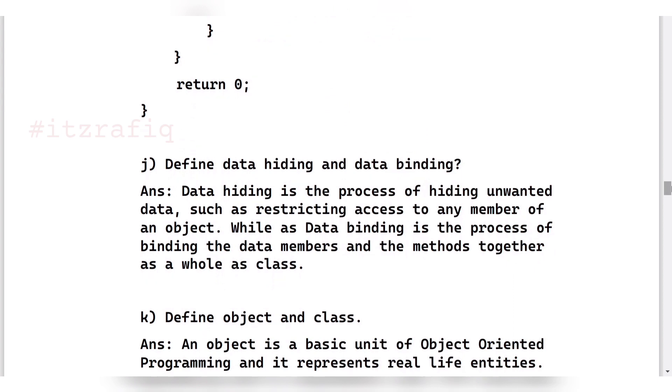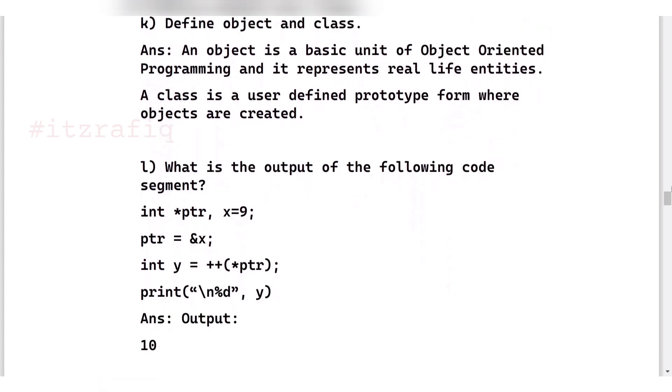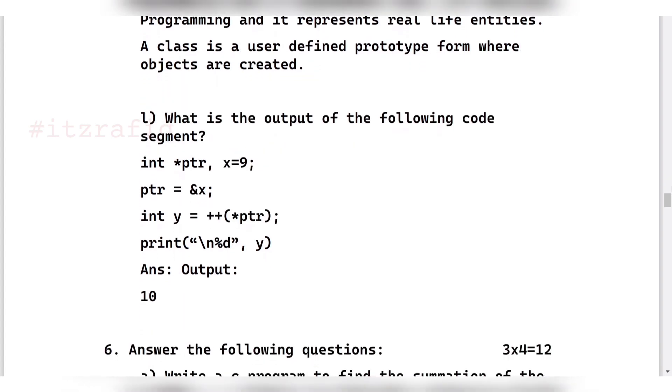Next, define data hiding and data binding. This is from chapter 10 from encapsulation. Data hiding is the process of hiding unwanted data such as restrictions, and data binding is used to bind the data members and methods together. Define object and class: object is the basic unit of an object-oriented programming, and class is the prototype from where we can create the objects. What will be the output of the following code? Here we have a pointer variable and we have a variable. There we are assigning pointer to the variable x, then we increase the value of the pointer by 1. So after when we increase the value of the pointer, even the main variable's value will also get changed. So the output will be 10.